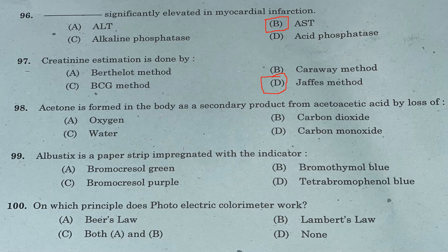Question 98: Acetone is formed in the body as a secondary product from acetoacetic acid by loss of — Option A: oxygen. Option B: carbon dioxide. Option C: water. Option D: carbon monoxide. Answer is Option B, carbon dioxide.